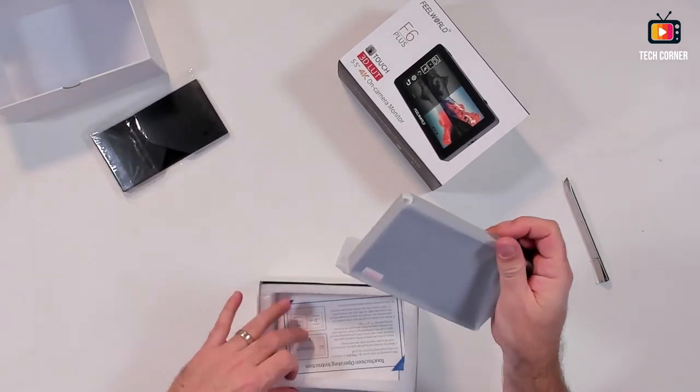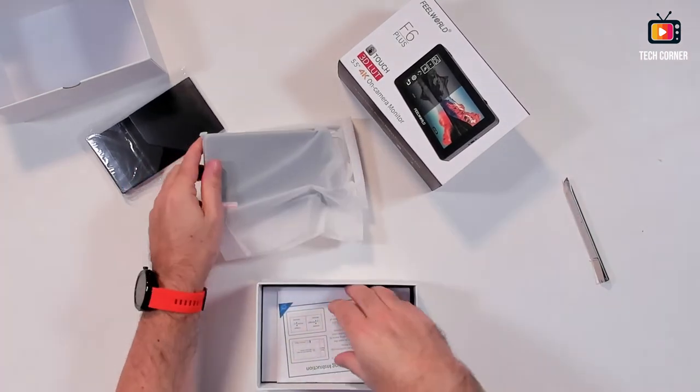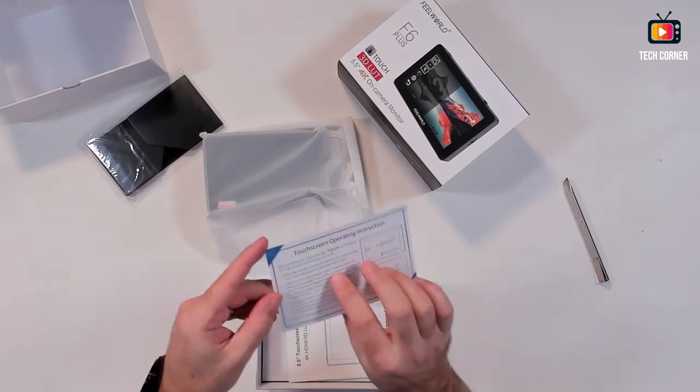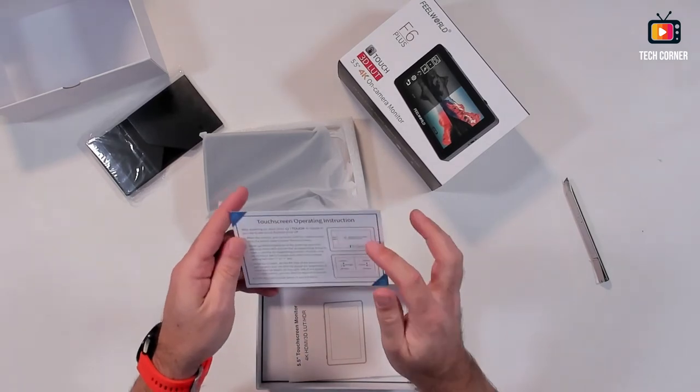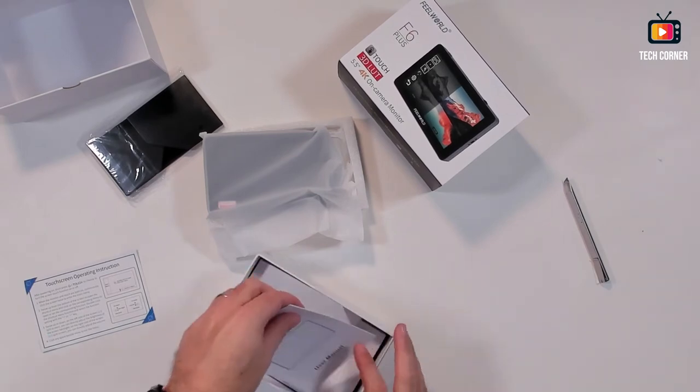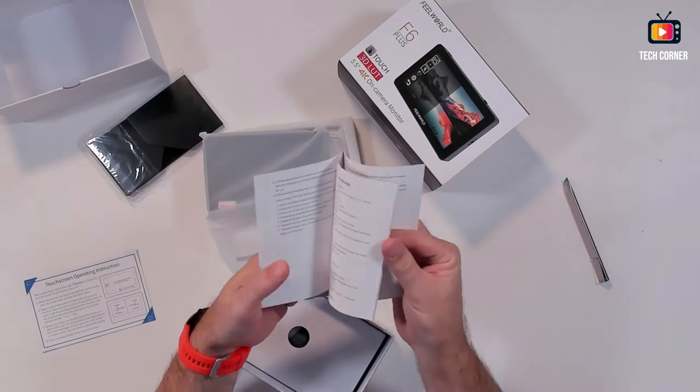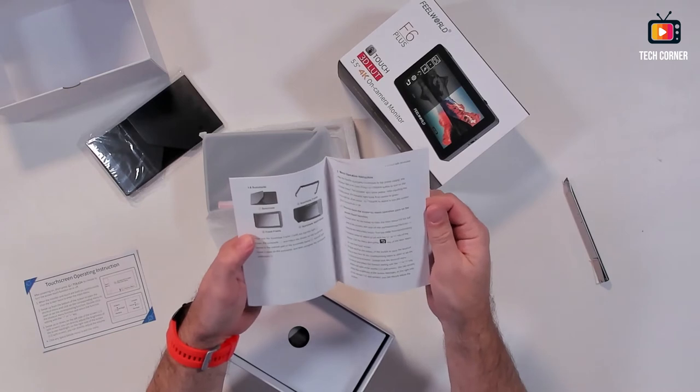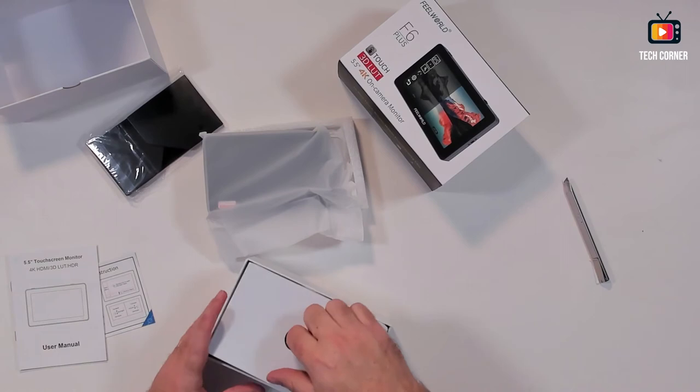We have the monitor. Let's see first what we have in here. Touch screen operating instruction. This is a quick guide in English and Chinese with the keys and everything else. We have also a user manual, a small user manual. It seems organized with the infographics.